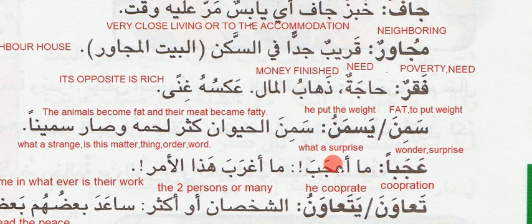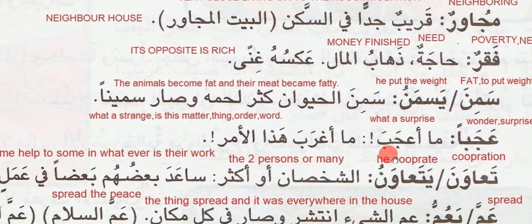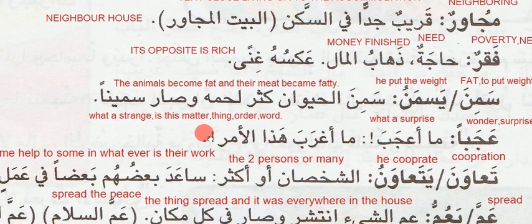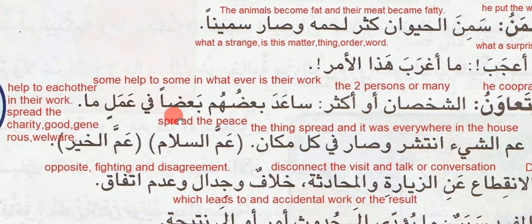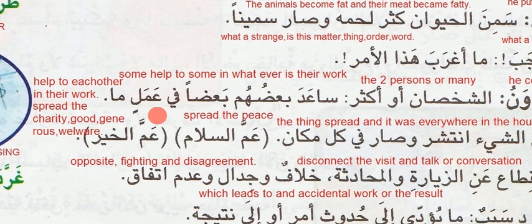Ajaban means wonder or surprise. Ma ajaba — what a surprise. Ma aghraba hazal amar — what a strange matter, thing, order, or word. Amar we say for many things — what's the matter or the thing or the order. Taawun means cooperation. Ya taawun — he cooperates. Al-shakhsaan aw-aksar — two persons or more. Saad al-baazahum fi al-amalin ma — some help others in whatever work there is. We can say help each other in their work.